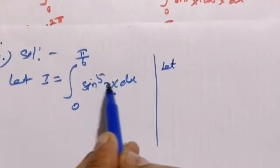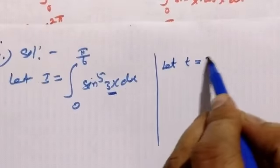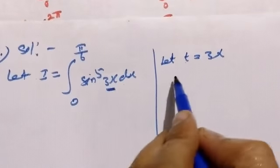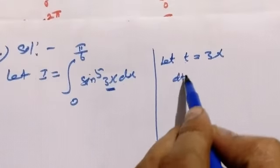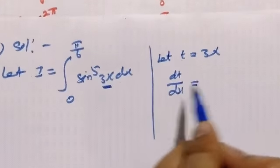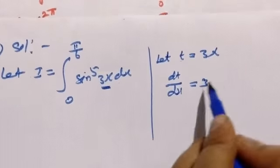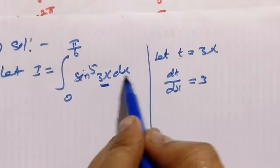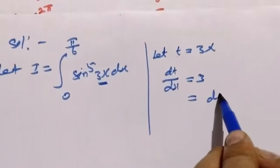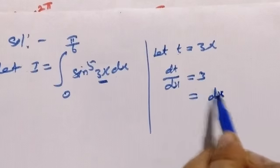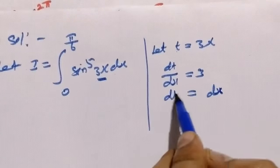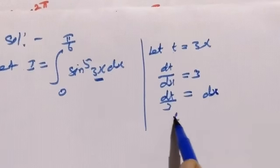Second one, we are going to make a substitution. Let t = 3x, so dt/dx = 3, which gives us dt = 3dx, therefore dx = dt/3.